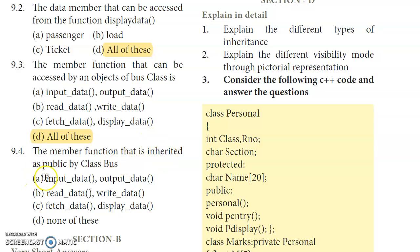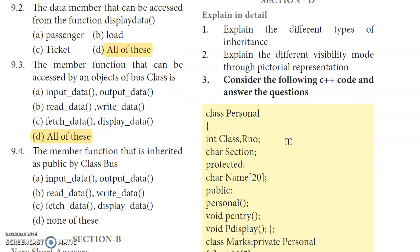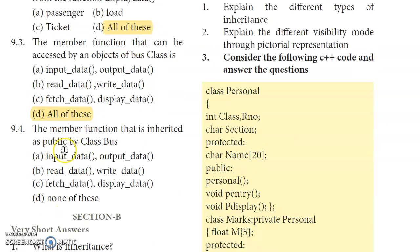Question 9.4: The member function that is inherited as public by class Bus. Looking at the inheritance modes — protected and private inheritance modes are used. When inherited this way, protected and private members are not public. Checking the accessibility, none of the member functions are inherited as public by class Bus. So the answer is None of these.